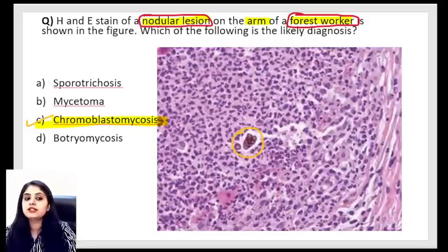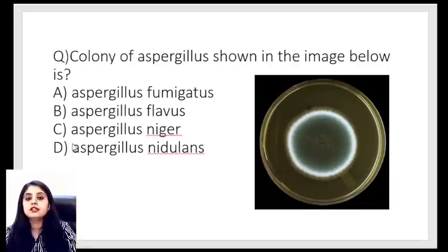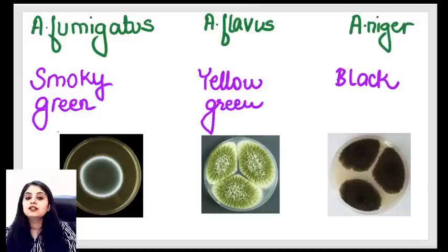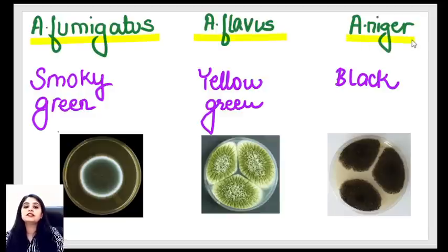Key points for Pneumocystis carinii: causes pneumonia with plasma cell infiltrate (plasma cell pneumonia) in immunocompromised patients; stained only with GMS (blackish color); shows crushed ping pong ball / hat / cup and saucer appearance. Answer to the question: exudate with plasma cell infiltrate (intra-alveolar lung involvement).